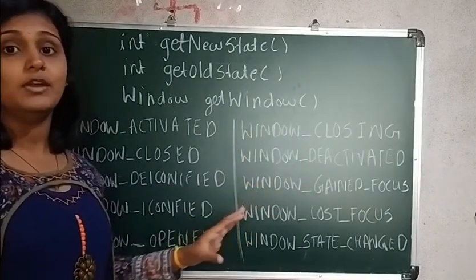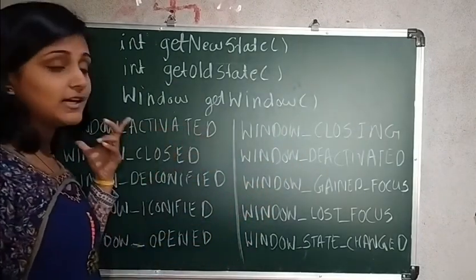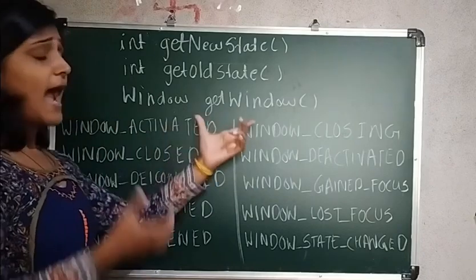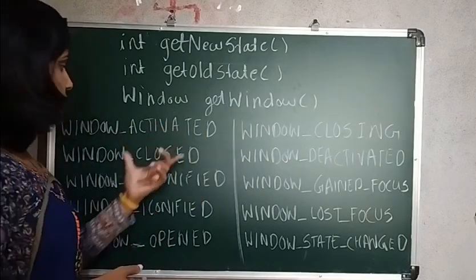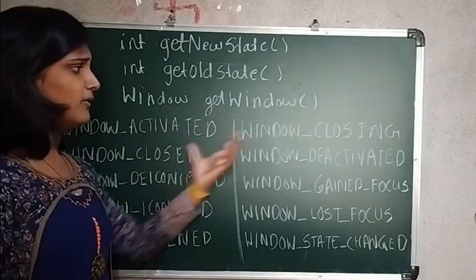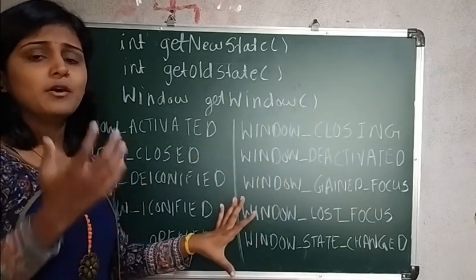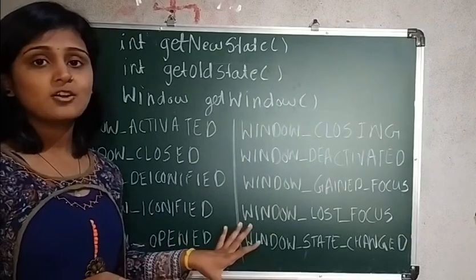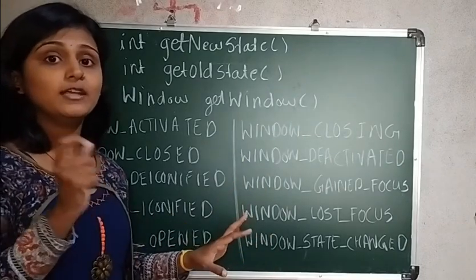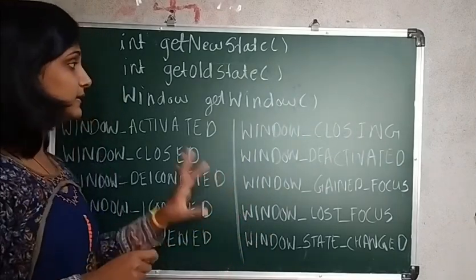Now here we see the constants. The integer constants of WindowEvent - it is activated when the user activates the event. It will invoke whether it is closed, deactivated, closing, opened, etc. Whenever you're going to perform action related to these constants, we use the WindowEvent class. Remember this.